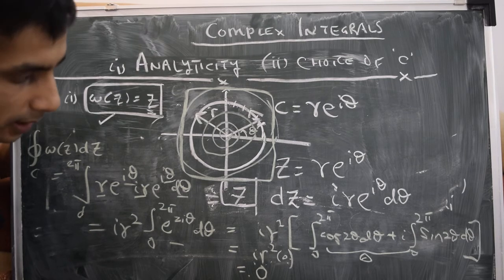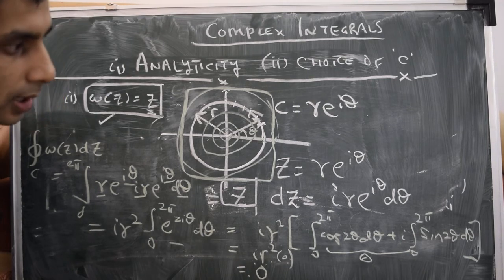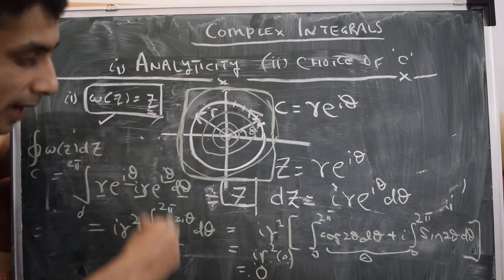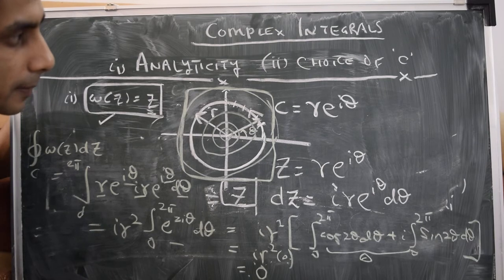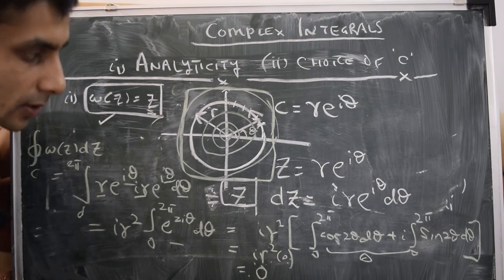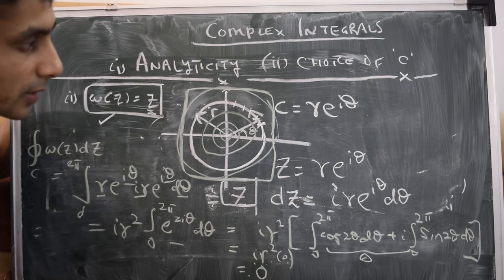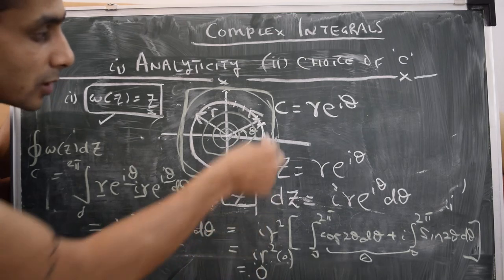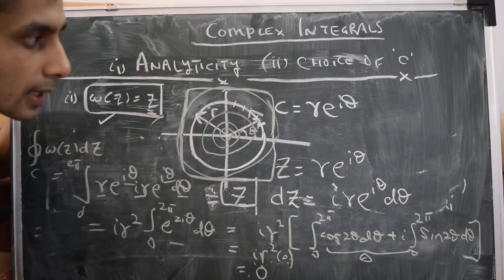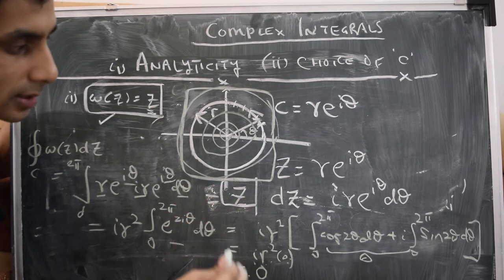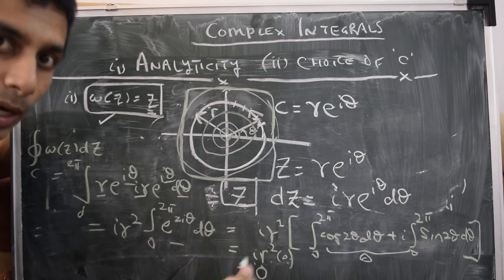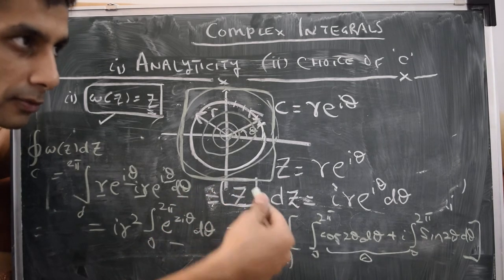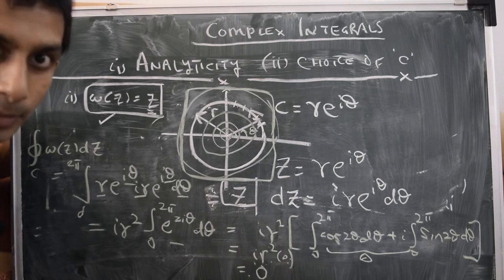The method we've used so far — converting the contour integral into an integral over one real variable by expressing the curve parametrically — is called parametric evaluation of the integral. In both examples, we parametrized the contour (square or circle) in terms of a single variable, reducing the contour integral to a standard one-variable integral.